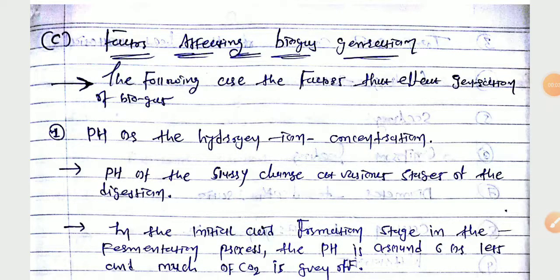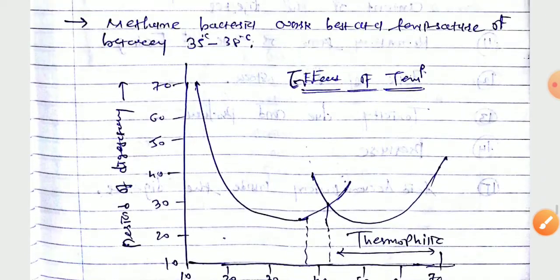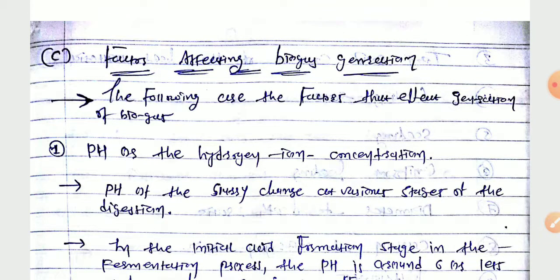Good noon everyone. Today we will discuss about Energy Technology, Unit Number Five: Energy from Biomass, and AB7 Semester Unit Number Seven: Energy from Biomass. Today's topic is factors affecting biogas generation in detail. The following points are the factors affecting biogas generation.